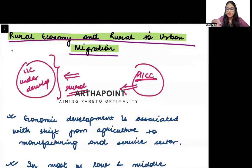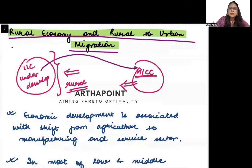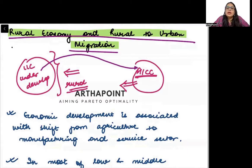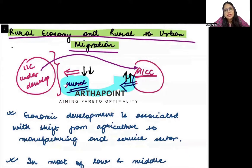It has been seen that as a low-income country transits towards a high-income country, as it goes through the process of development, people migrate from the rural area towards the urban area. So slowly the urban population starts increasing and the rural population starts decreasing.